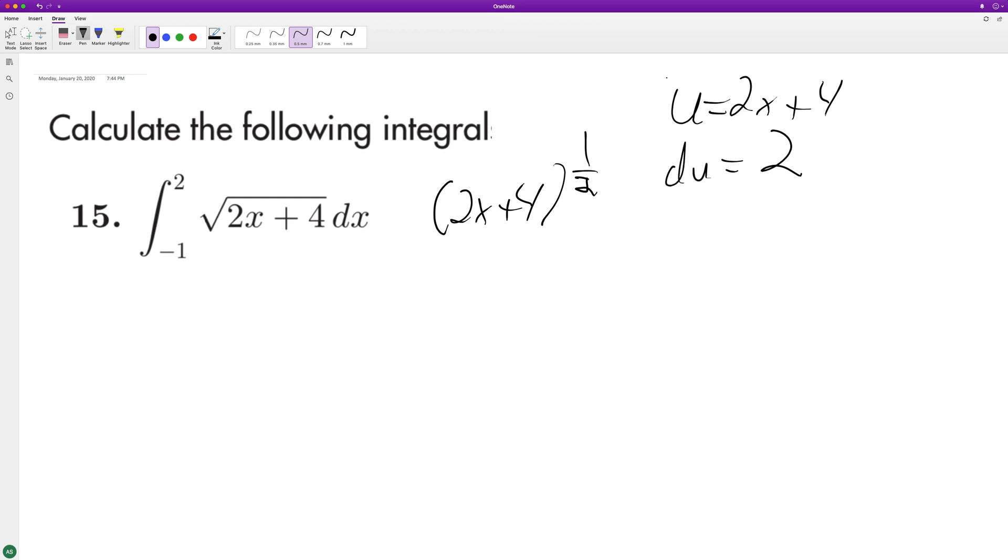du will be equal to 2. So to get du equal to dx, we need to multiply du by 1 half. And then we have 1 half on the outside here. I'm just finding the general integral first. So this is u raised to the 1 half, du.